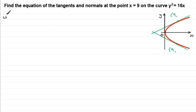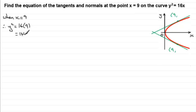When x equals 9, we know that y squared equals 16x, so y squared must equal 16 times 9, which is 144. To get y we take the square root, and the square root of 144 is plus or minus 12. So that gives us our corresponding y-coordinates: (9, 12) for one point and (9, -12) for the other.